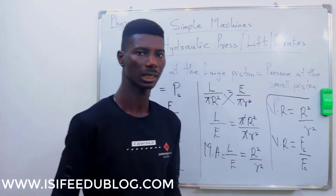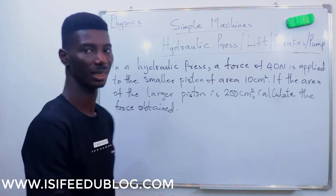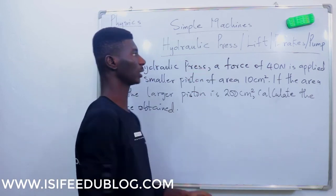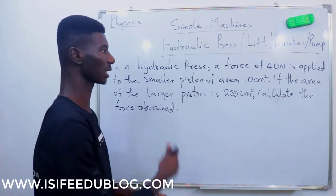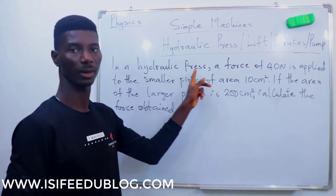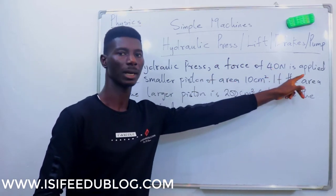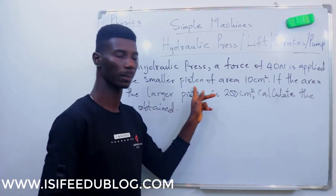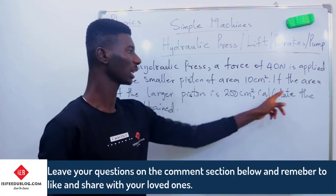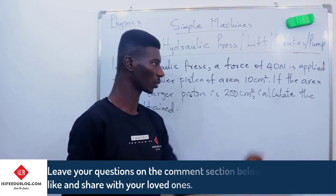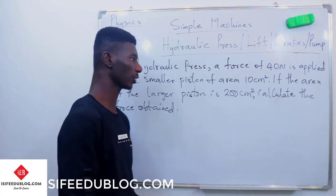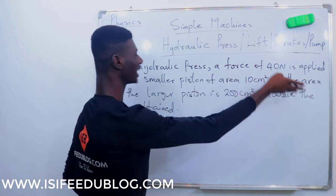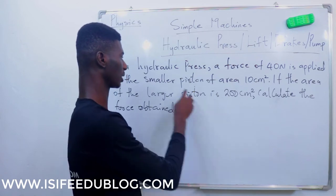Now let's apply these formulas using an example. The question says: in a hydraulic press, a force of 40 newtons is applied to the smaller piston of area 10 cm². If the area of the larger piston is 200 cm², calculate the force obtained. The force obtained at the larger piston is the load, while the force applied to the smaller piston is the effort.